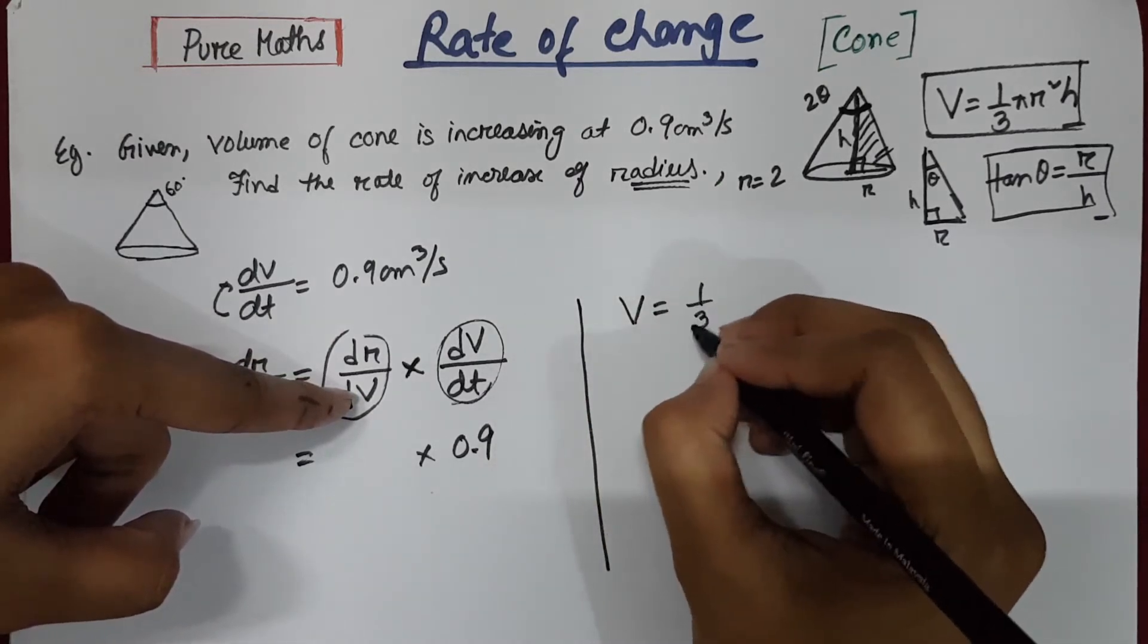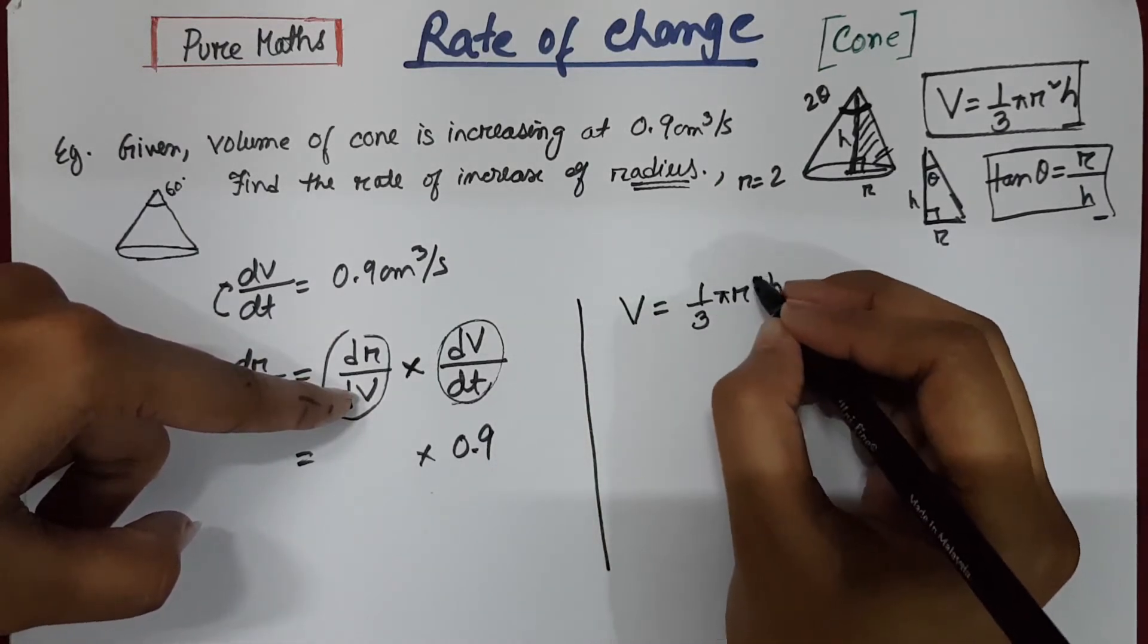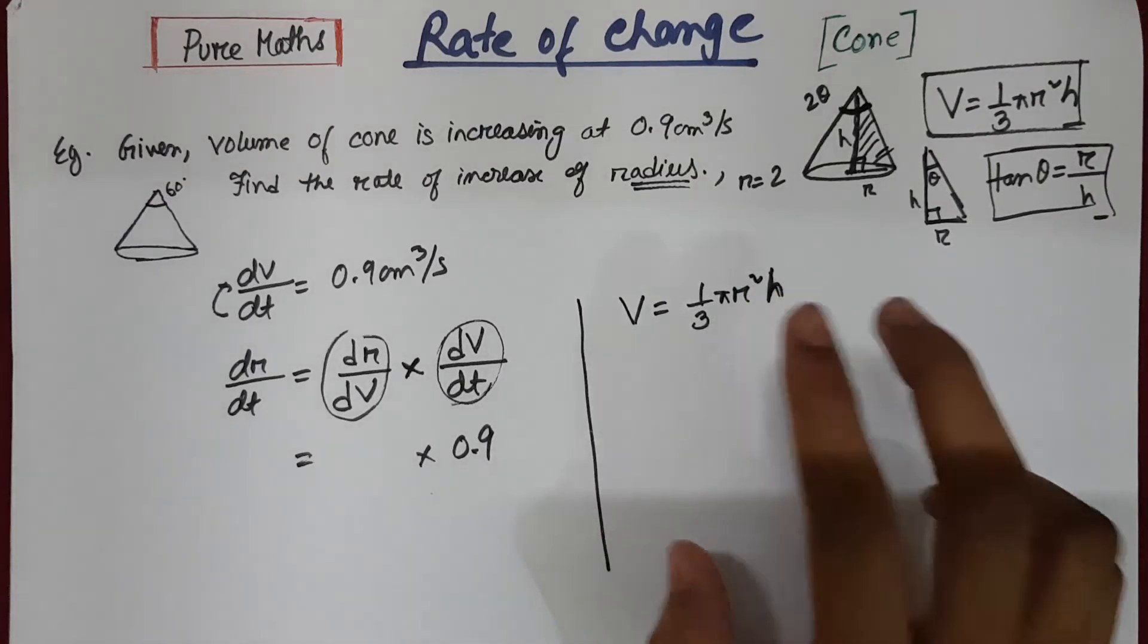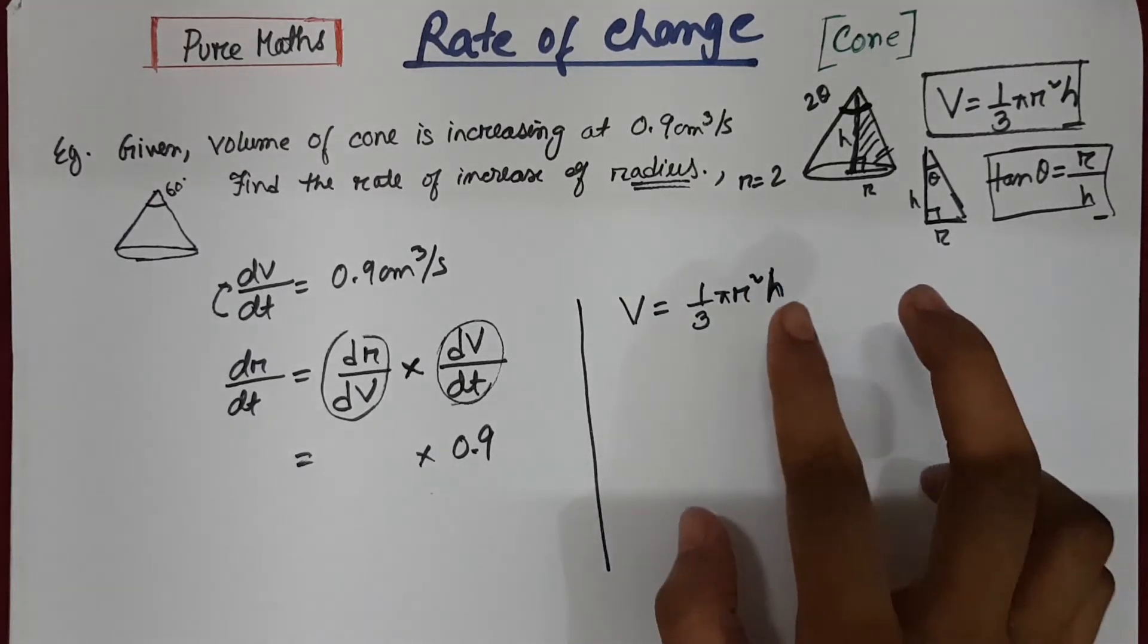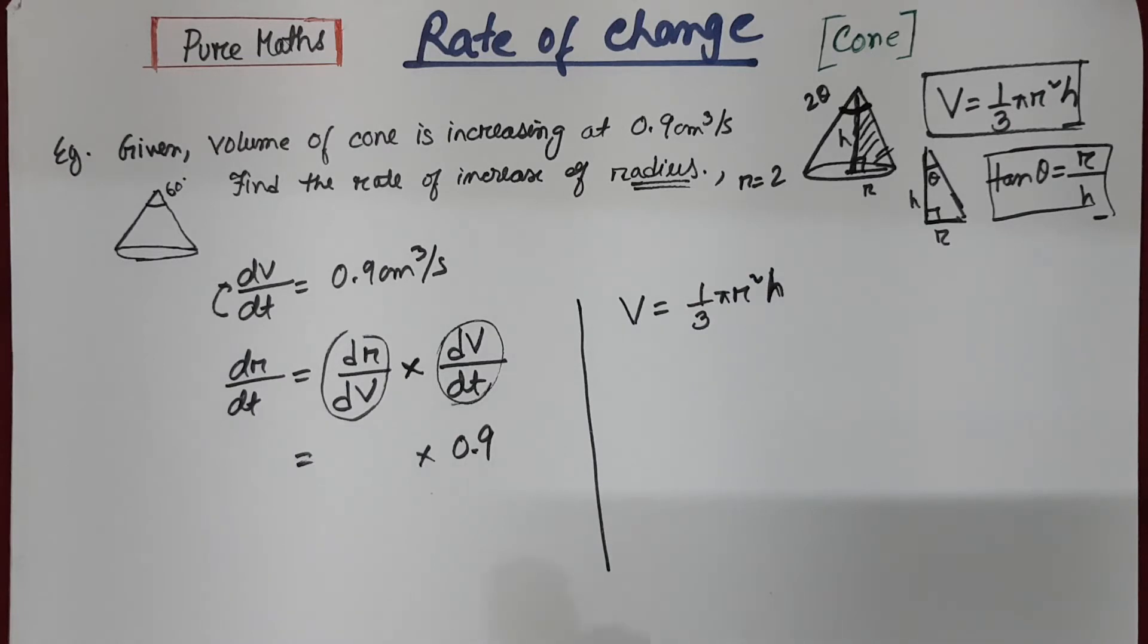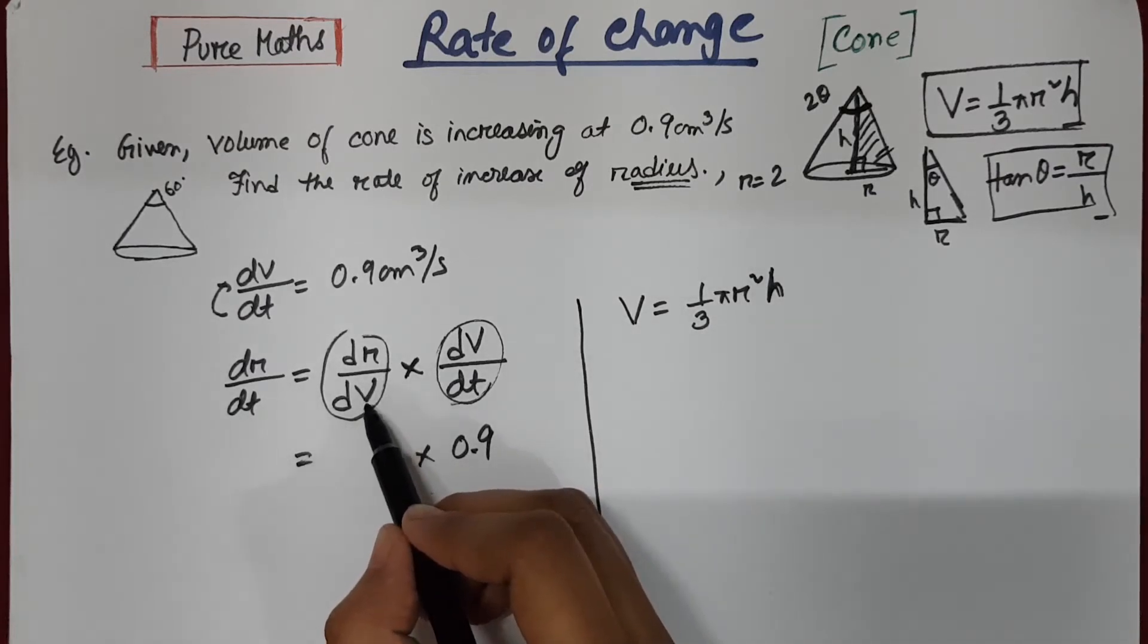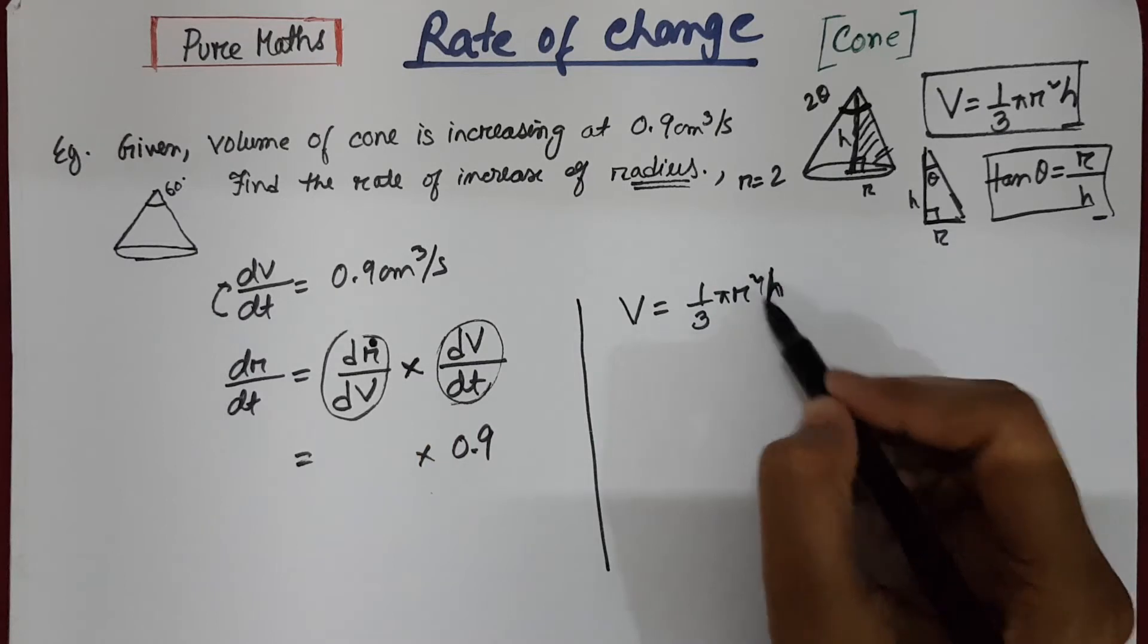Volume is 1 by 3 pi r square h. Like I mentioned in my previous video about rate of change for cylindrical objects, the problem is you have radius and height, but you need only radius or only height. The reasons are explained in the previous video. For this one we need to differentiate volume with respect to radius, so the height has to be replaced.